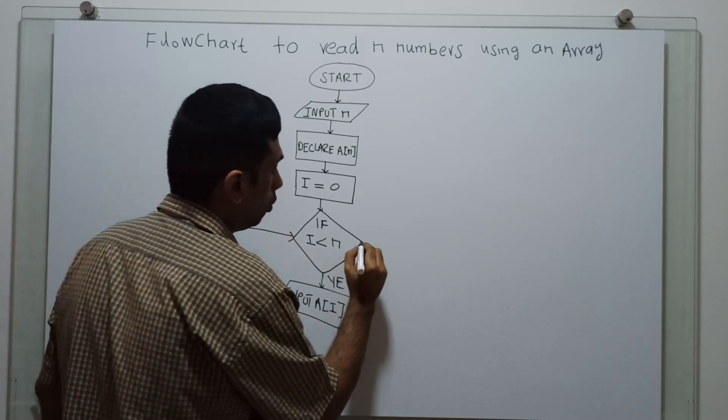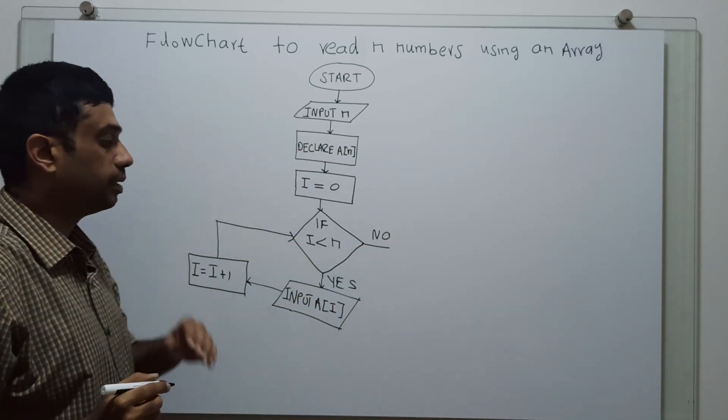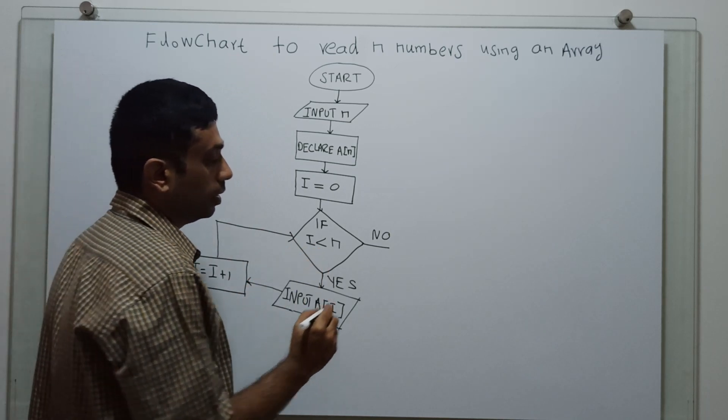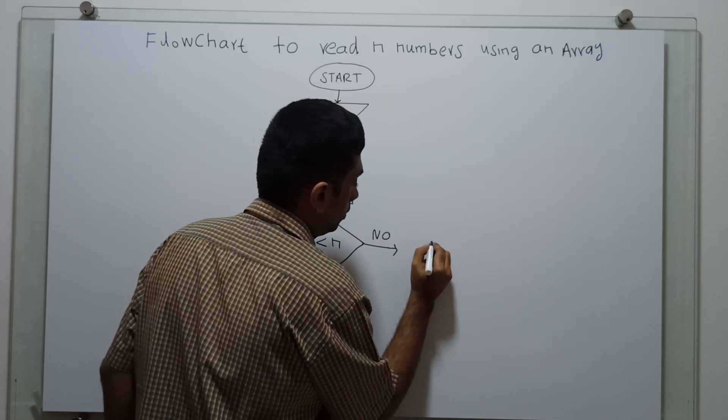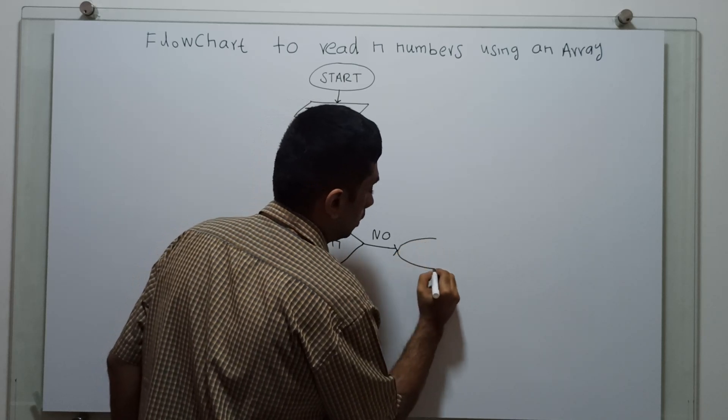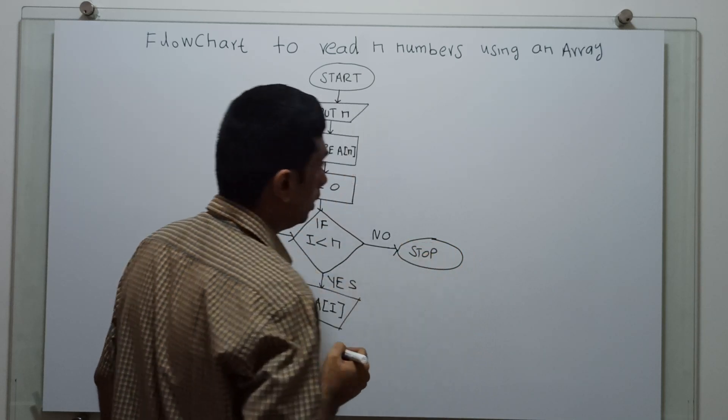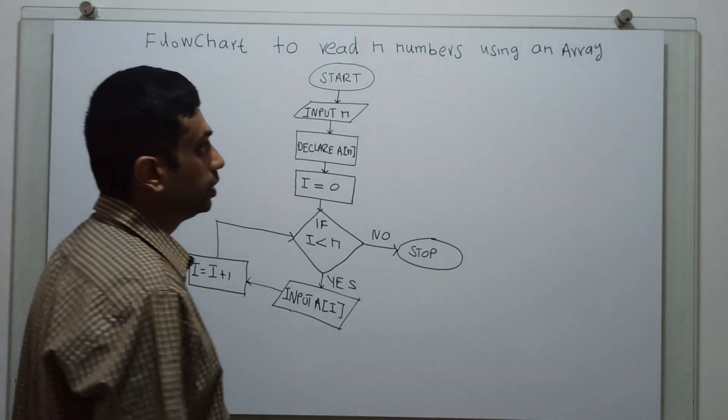If it is no means, when i is not less than n, then the condition will become false or no means. This is the end of the flowchart. Now let us discuss how the flowchart works.